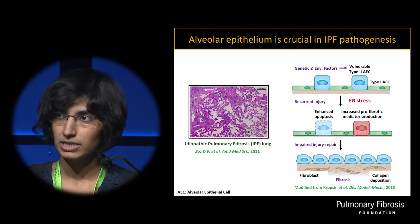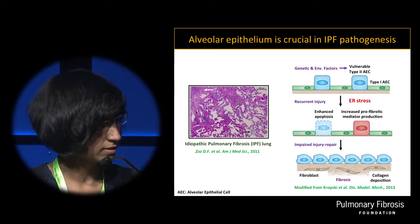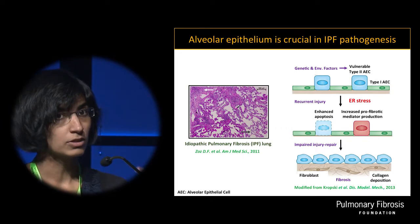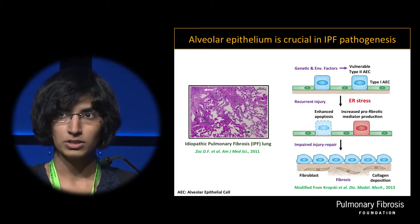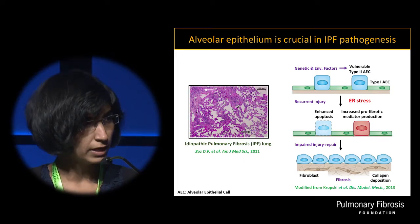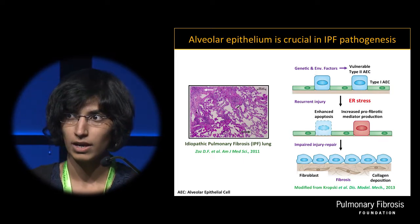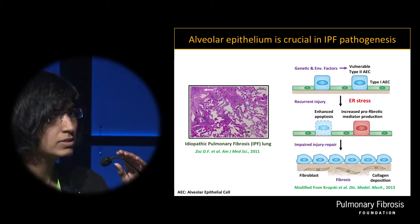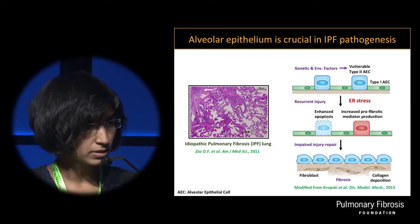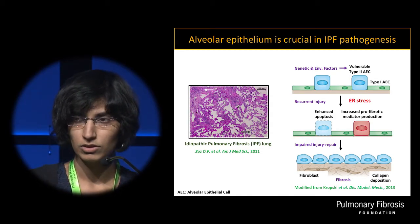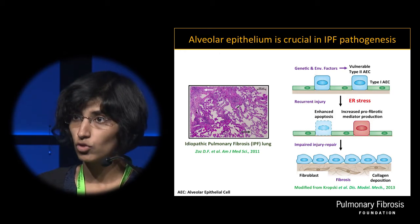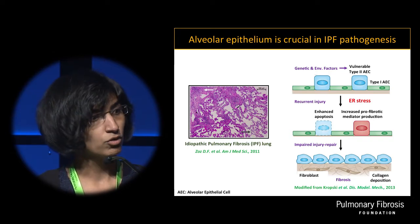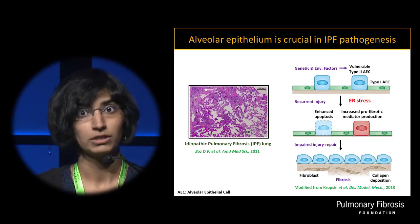IPF is a devastating disease characterized by progressive scarring that disrupts lung structure and function over time. In the work I'll show you today, we have tried to better understand the pathophysiology of the disease. The alveolar epithelium is critical in disease pathogenesis. It consists of type 1 AECs that are structural cells, and type 2 AECs that are critical in repairing the epithelium when there is injury.